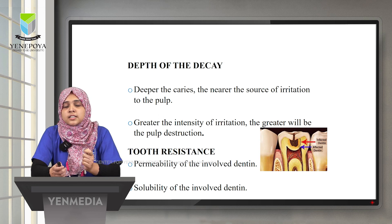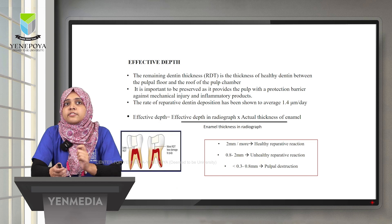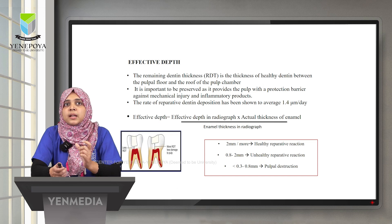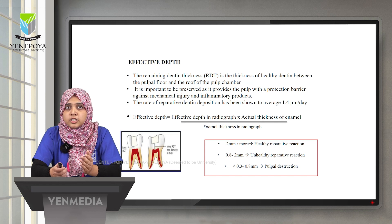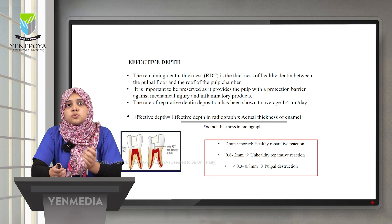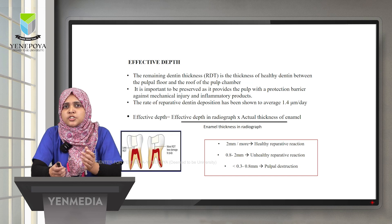Tooth resistance depends on the permeability and solubility of the involved dentine. An important factor is the remaining dentine thickness — the thickness of healthy dentine between the pulpal floor and the roof of the pulp chamber. If it is 2 mm or more, there is a healthy reparative reaction. At 0.8 to 2 mm, the reaction is unhealthy. Less than 0.3 to 0.8 mm indicates pulpal destruction has already begun.